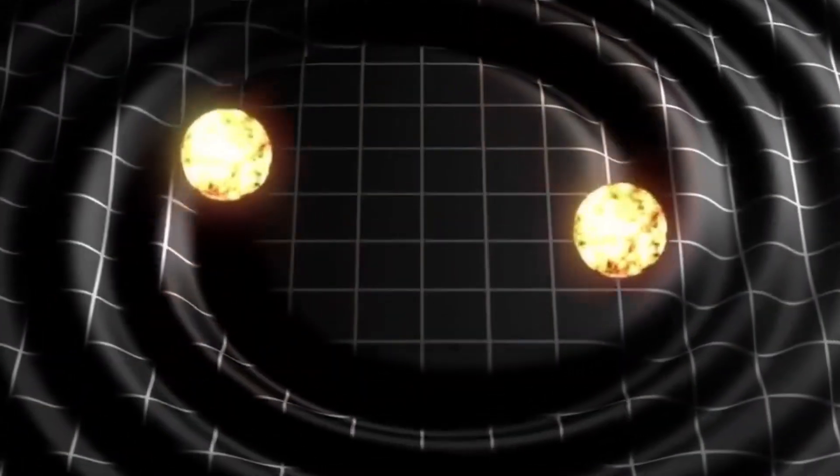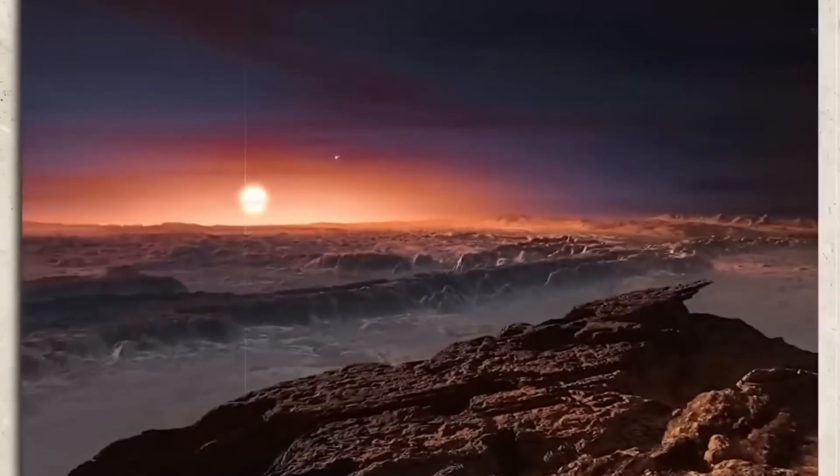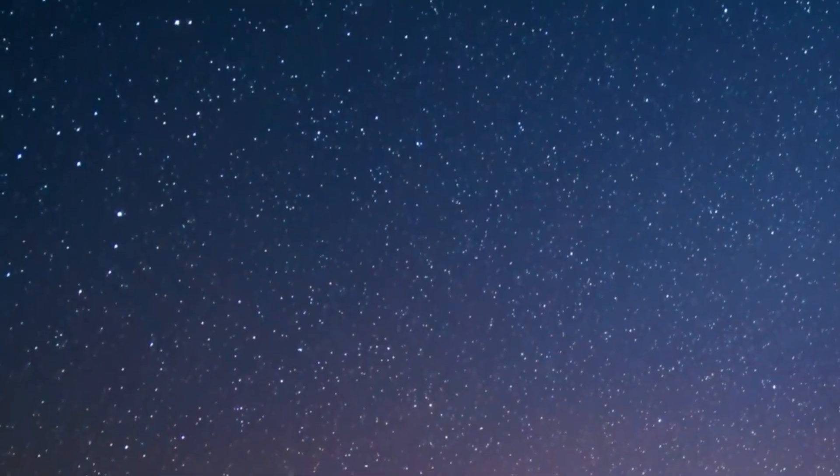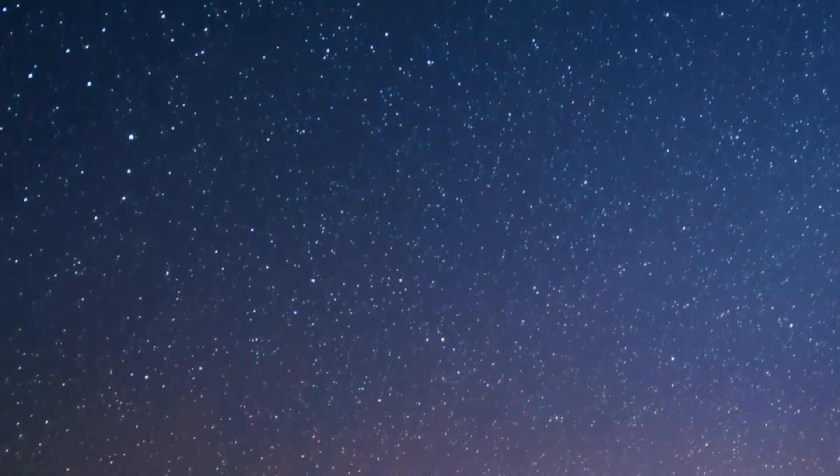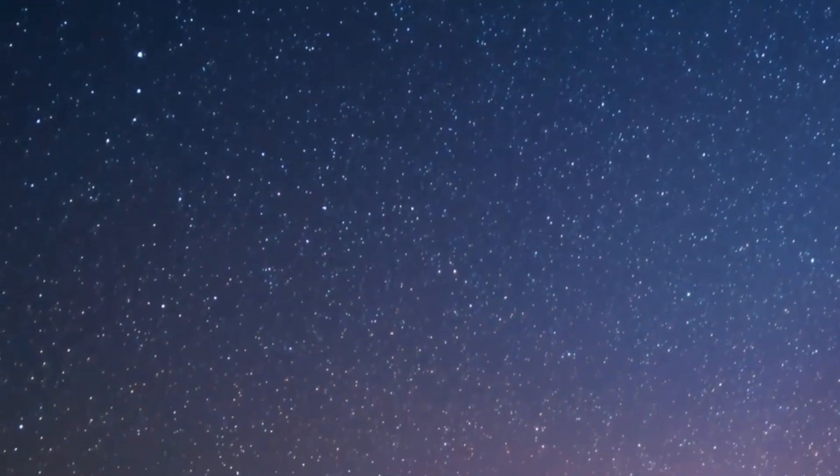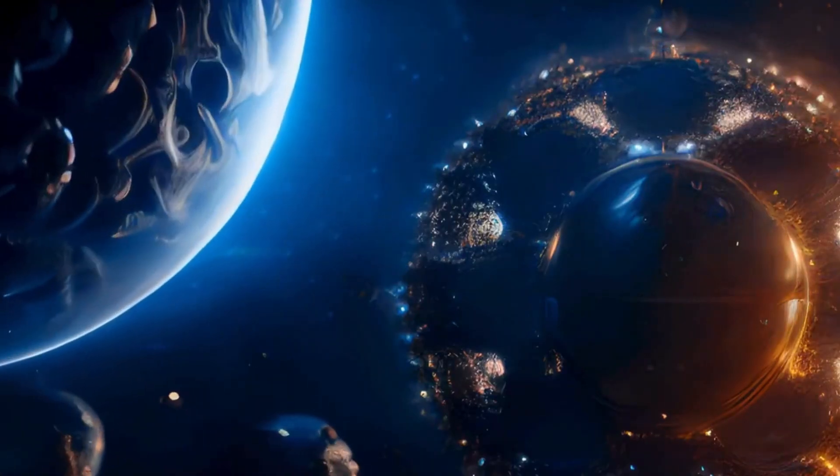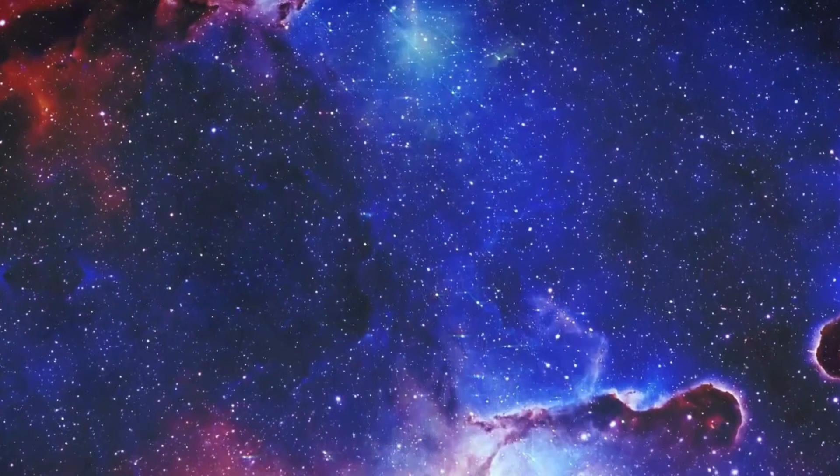Since Proxima B orbits so closely to its host star, there is a chance that it might be tidally locked, meaning one of the planets always faces the star while the other is in perpetual night. A civilization living on a tidally locked planet might need to focus on illuminating infrastructure and use very bright orbital mirrors to reflect sunlight from the day side to the night side of the planet.